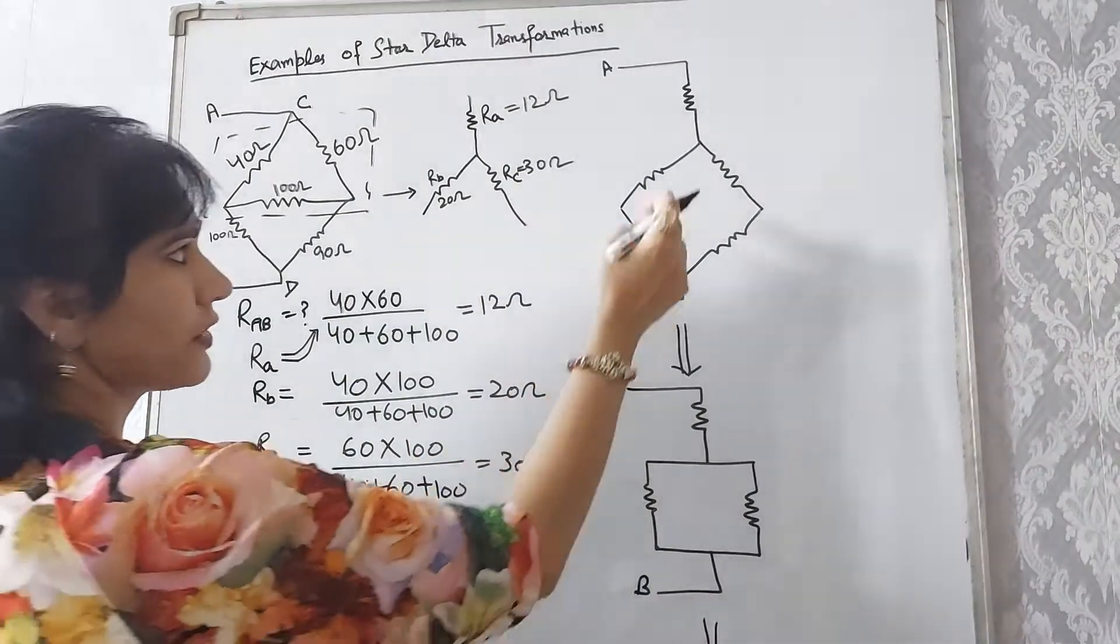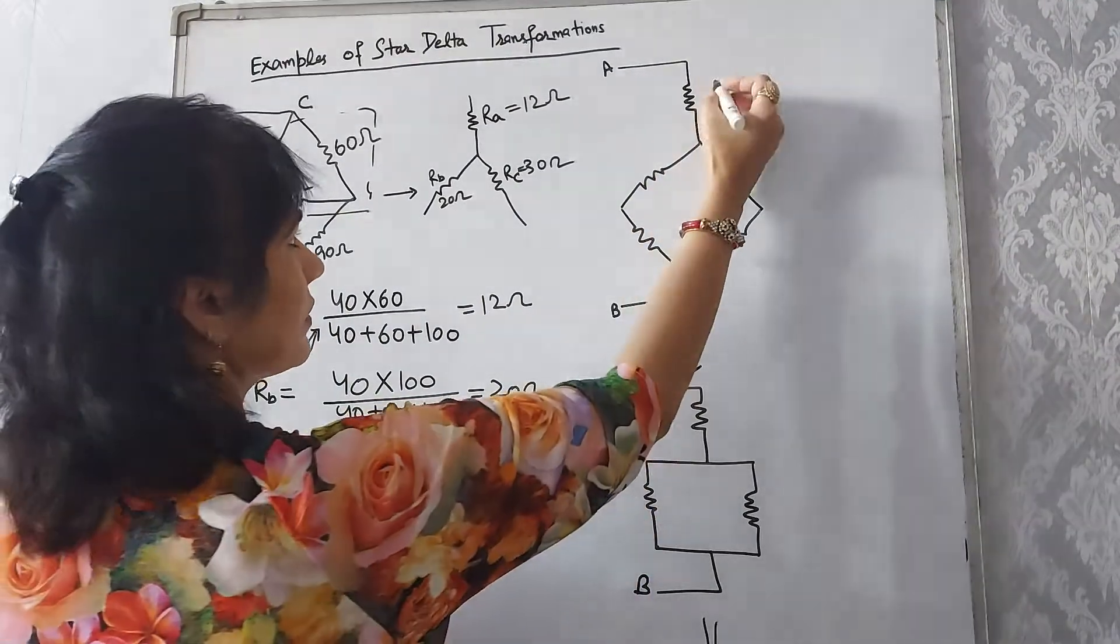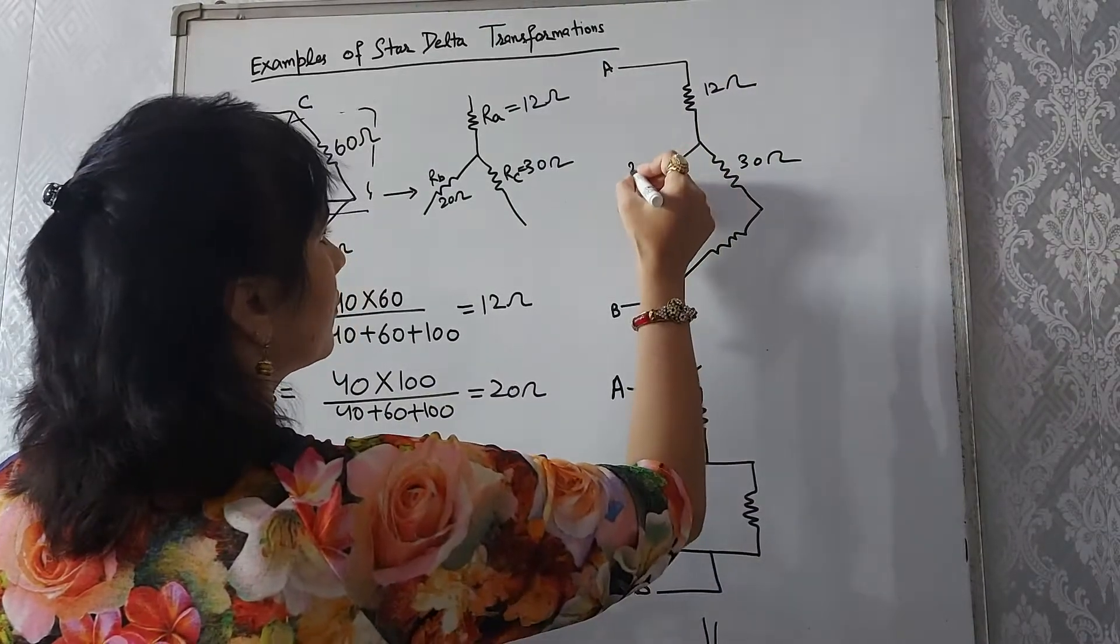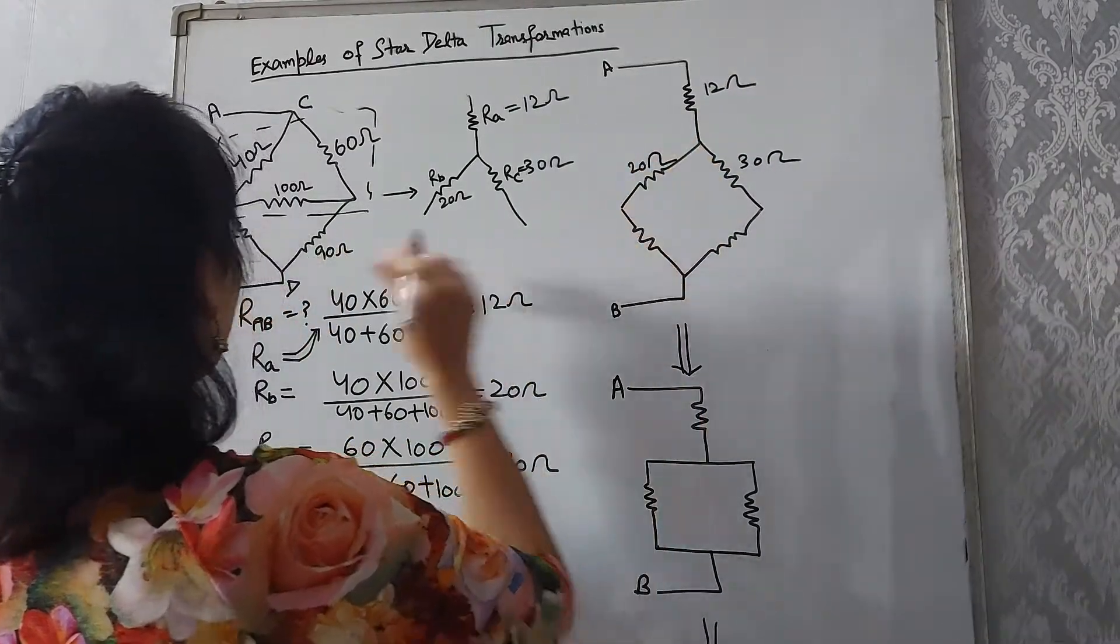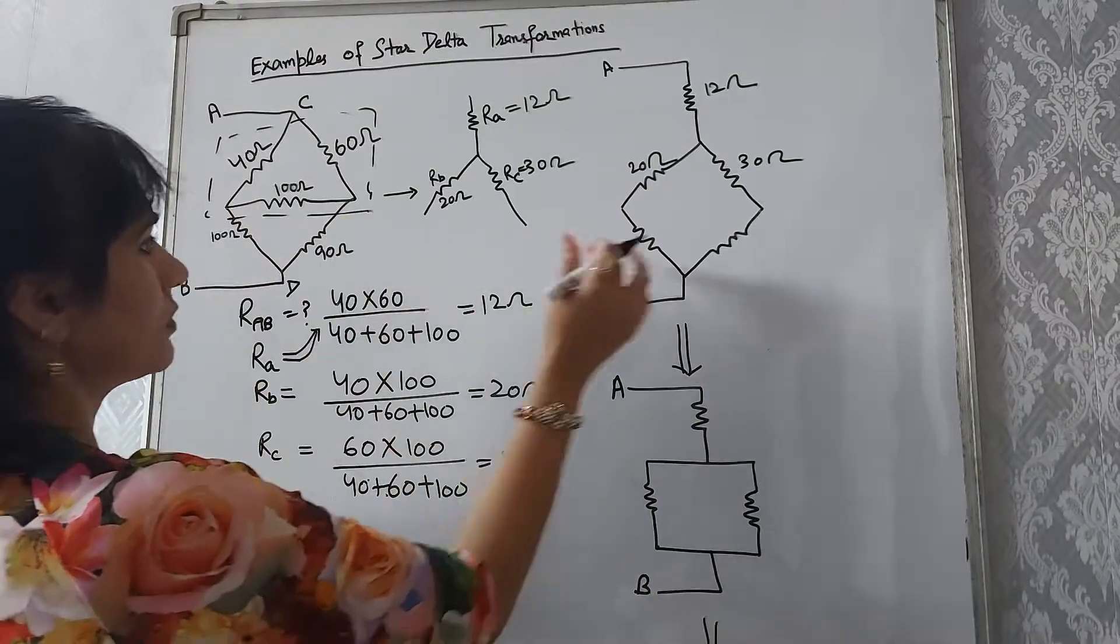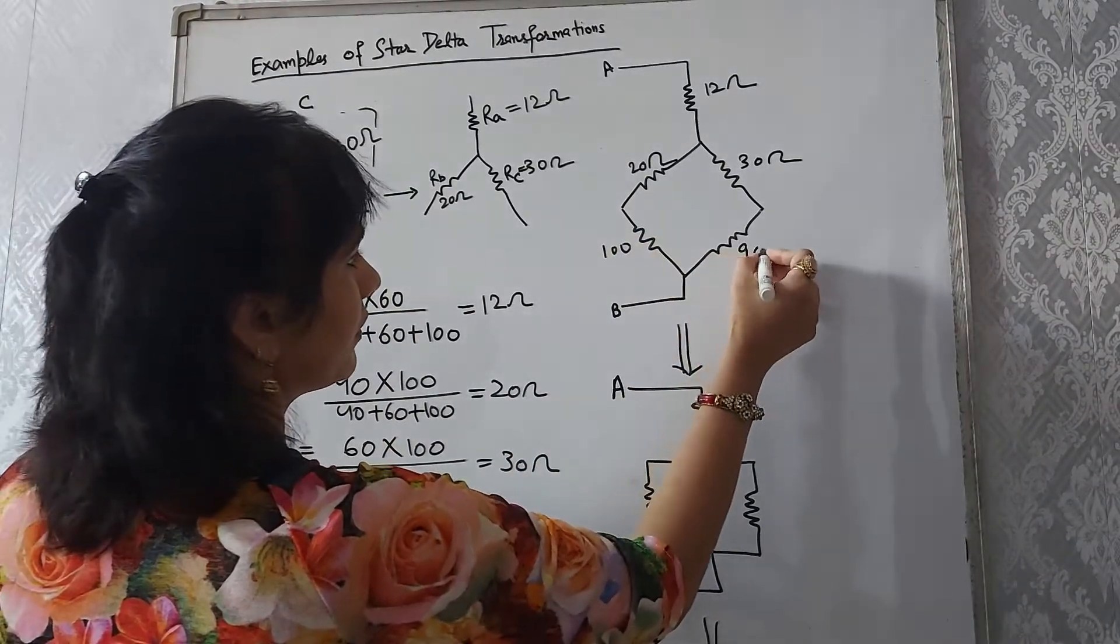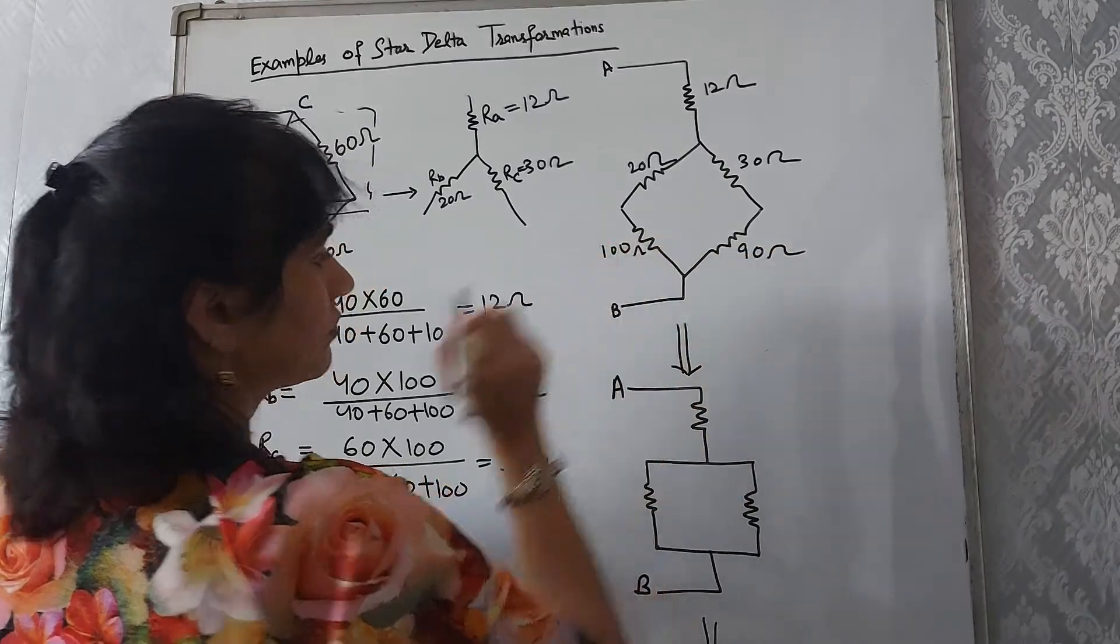If we redraw the circuit, it will become like this: 12 ohm, 30 ohm, 20 ohm, and this lower circuit remains the same, 100 and 90 ohm.